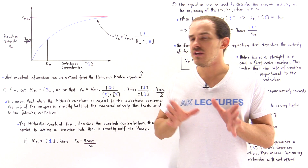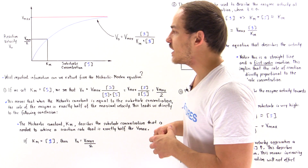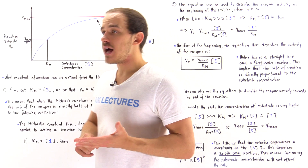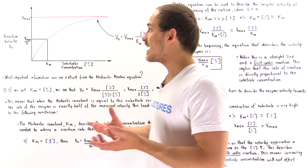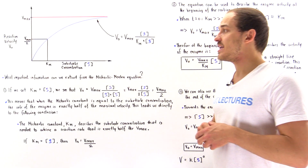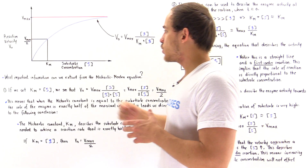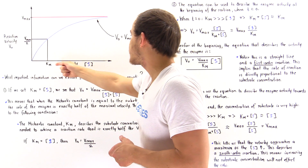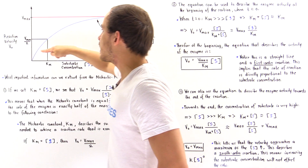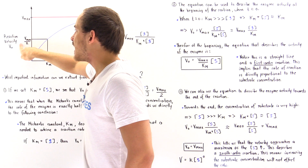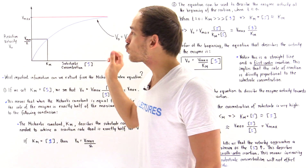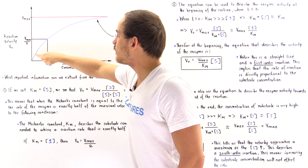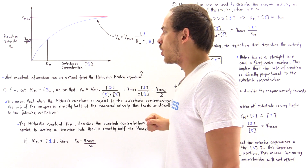In our previous discussion, we focused on the following graph, which describes how the rate of the enzyme in an enzyme-catalyzed reaction changes when we increase the substrate concentration. As we increase the substrate concentration, making the X value greater, we see that the Y value, the reaction velocity V naught, basically increases and follows the blue curve.